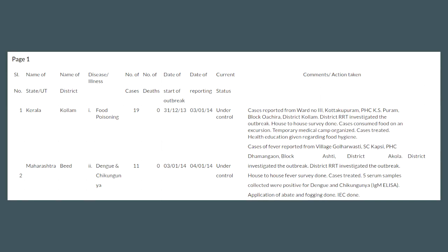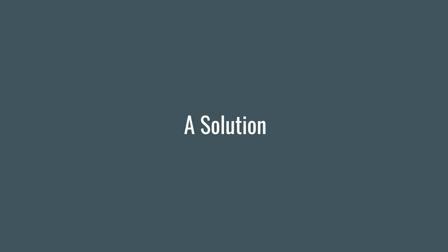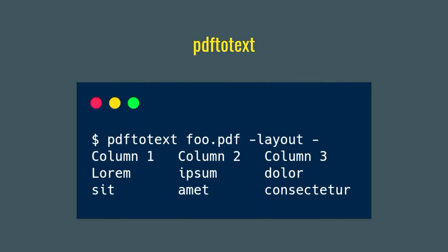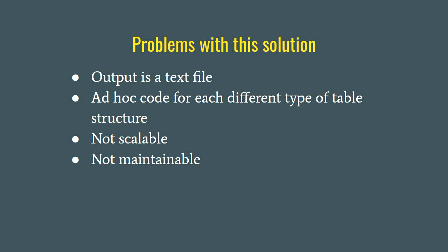When you pass a PDF through these tools, you get a result which is not very nice to work with and you can't do anything about it, which is kind of frustrating. One solution I tried was using PDF2Text, a command line utility installed on many Linux systems. You can use the layout argument to convert a PDF file into a text file, which will preserve the layout using spaces. But the problem with this solution is that you have to write custom code for each different type of PDF table structure — which is again not scalable.